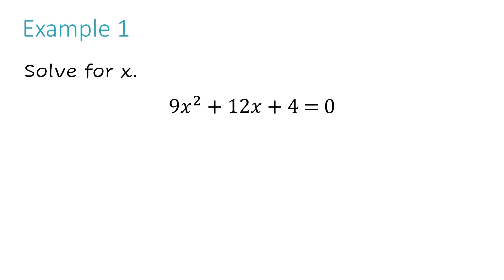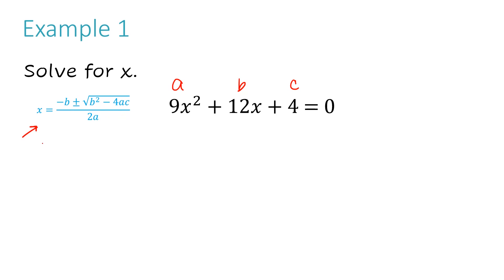The first thing you want to do is write down your quadratic formula. Now you want to make sure you identify each term — I have an a term here, a b term here, and a c term here. I need to plug in all of these pieces into my quadratic formula. So I'm going to clarify: a is 9, b is 12, and c is 4.